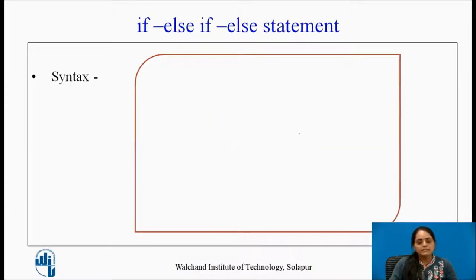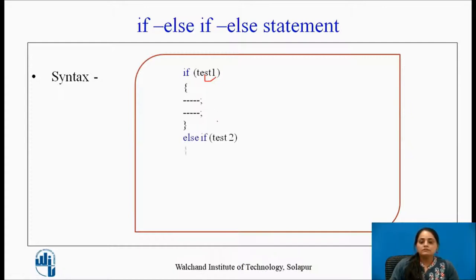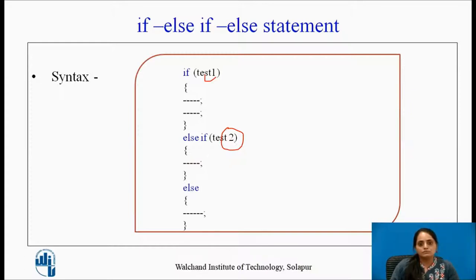What is the syntax of writing if-else-if in a C program? First, we write the if keyword followed by test one and the corresponding block of statements if test one is true. Then we write the else if keyword — note there is a space between else and if. If test two evaluates to logical true, the statements are enclosed within curly brackets. At the end, we have an else block executed when both test one and test two are false. This else is optional.